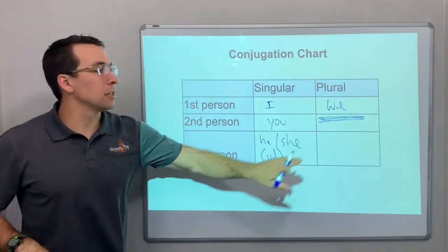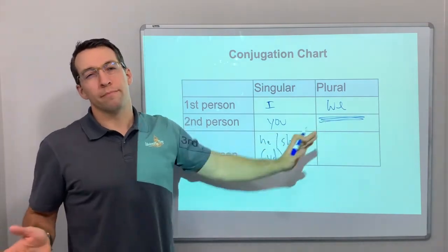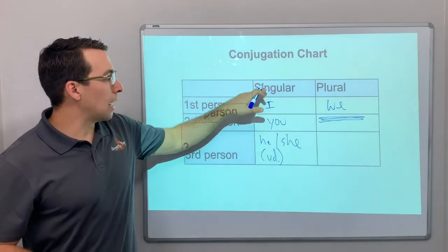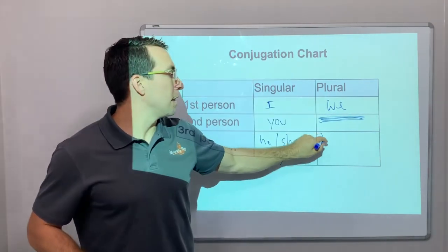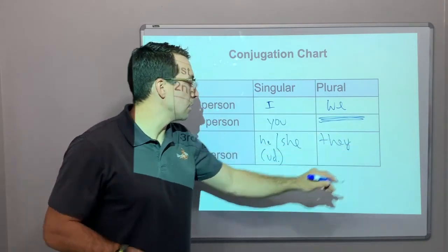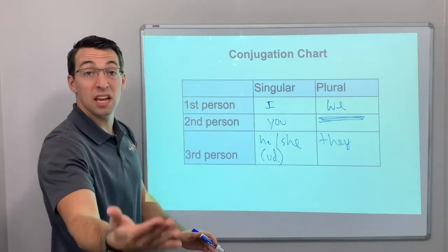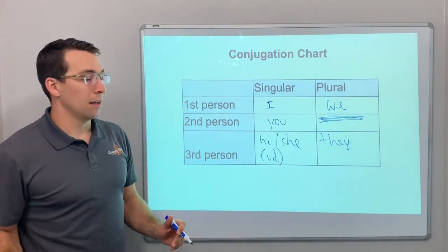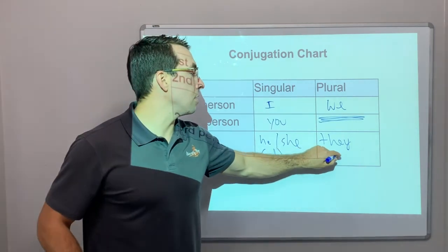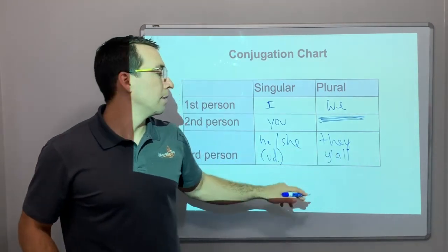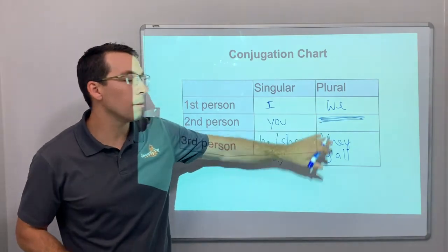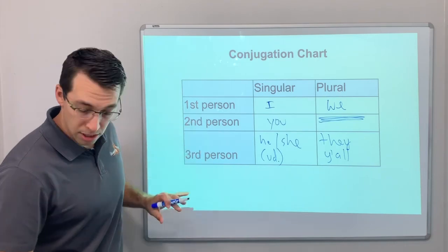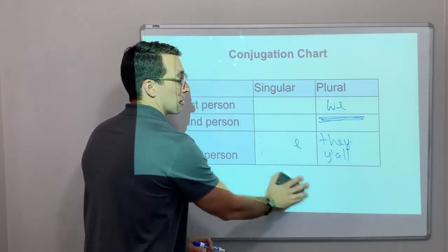Only Spain uses this box, it's the vosotros form. In the Western Hemisphere, you don't need it, and really, in Spain, you don't even need it either. So I, you, he, she, we, they. Because look, he, if you have he plus he, multiple he, plural he, it becomes they. And then y'all. This is our conjugation chart, and that's how it works.